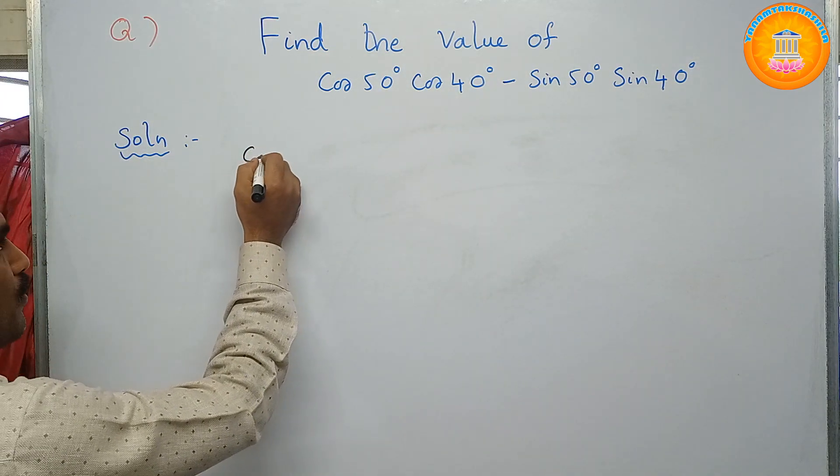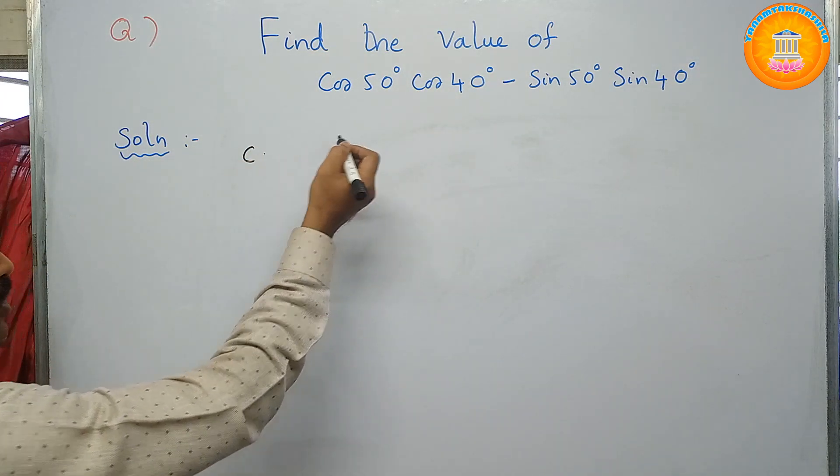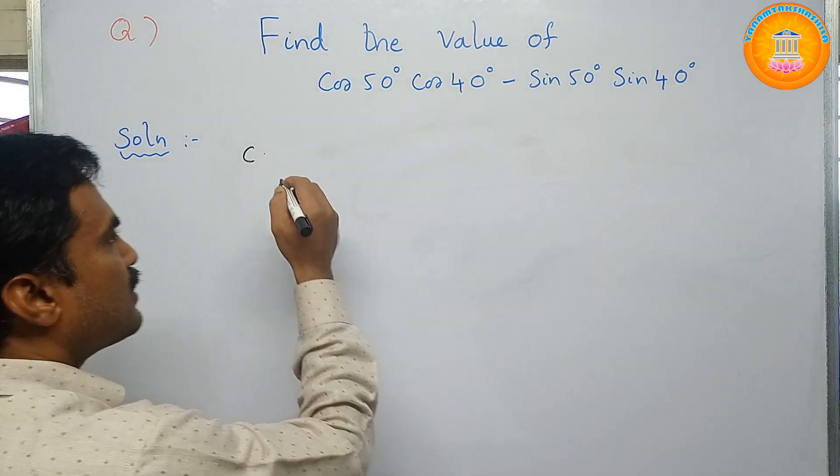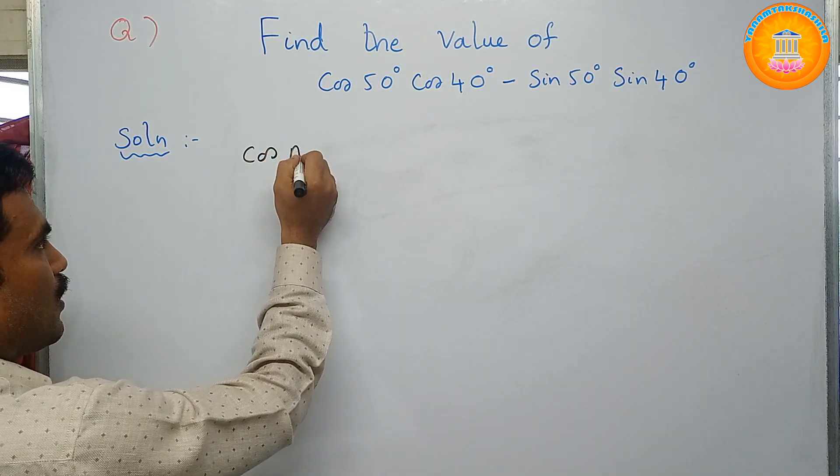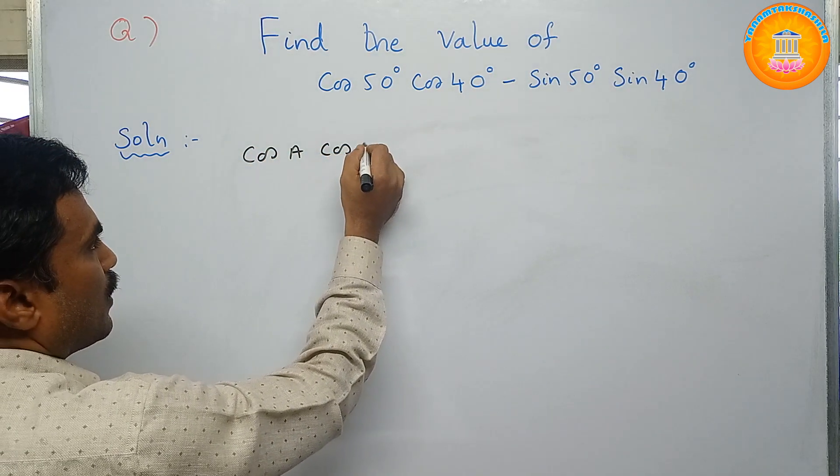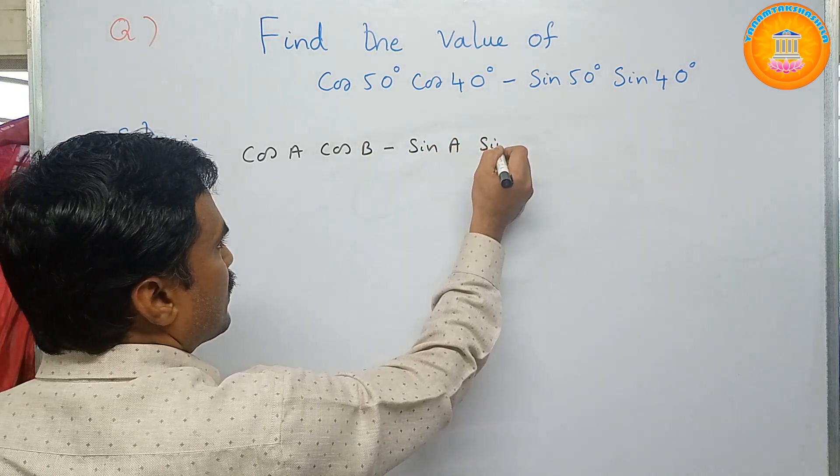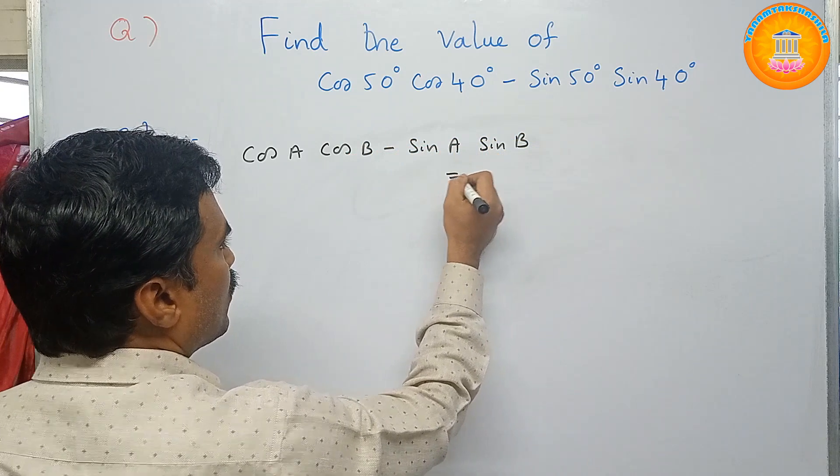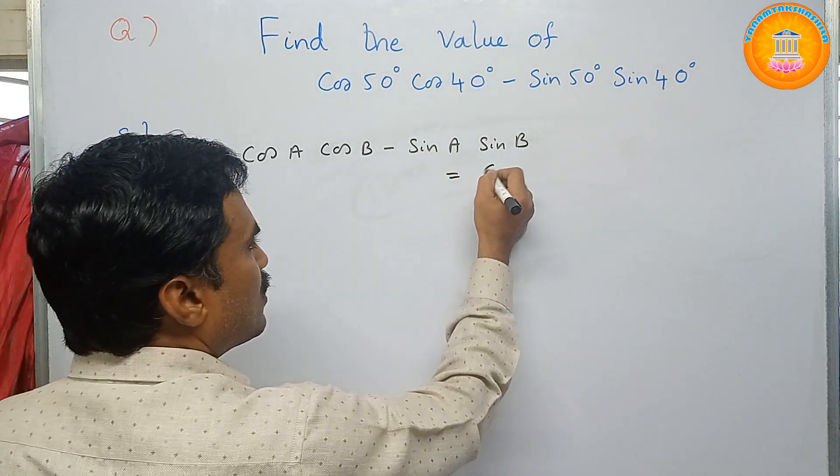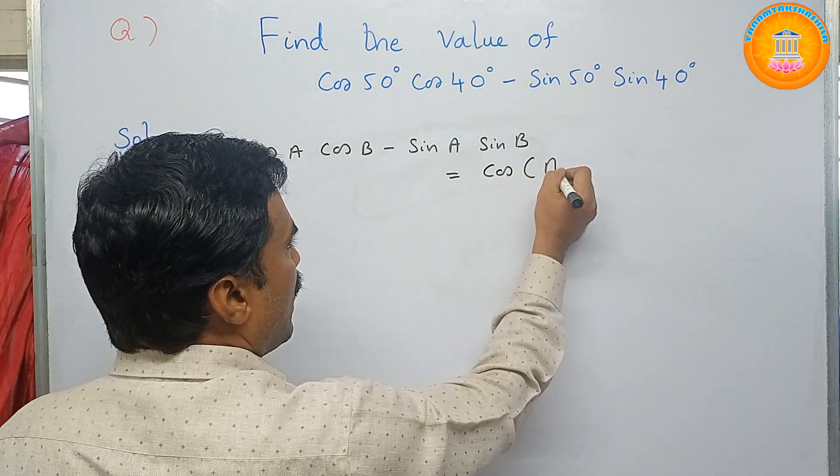We know that cos of A plus B equals cos A cos B minus sin A sin B. So, cos A cos B minus sin A sin B equals, what is this right hand side? Right hand side is cos of A plus B.